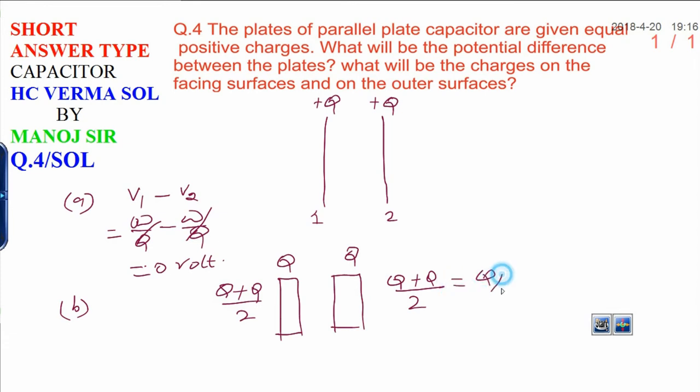This equals Q/2. So 2Q/2, which simplifies to Q. This means on the outer surface we have charge Q in both cases.